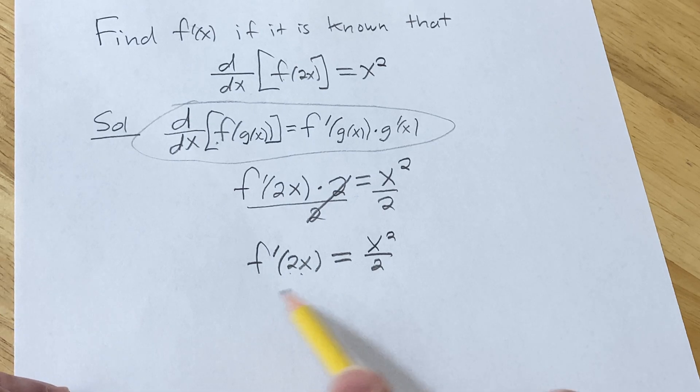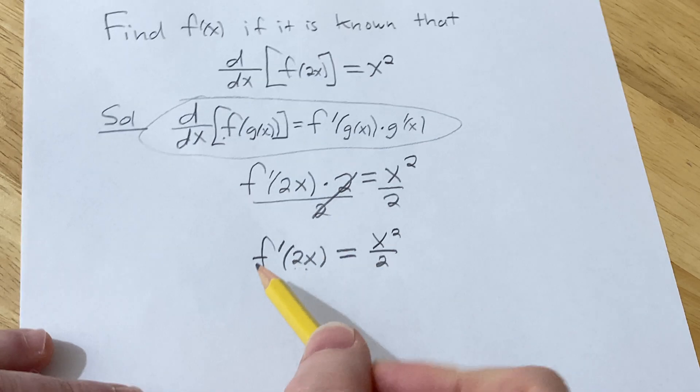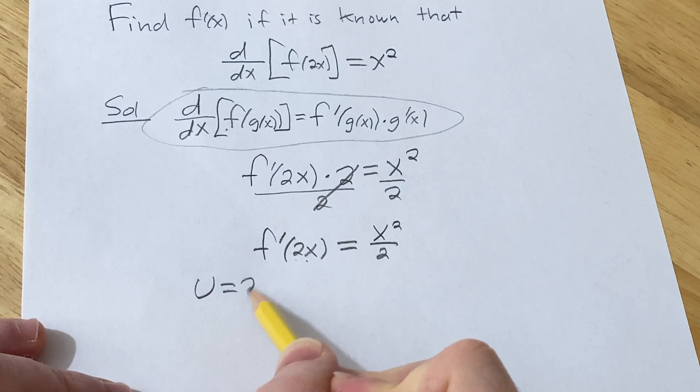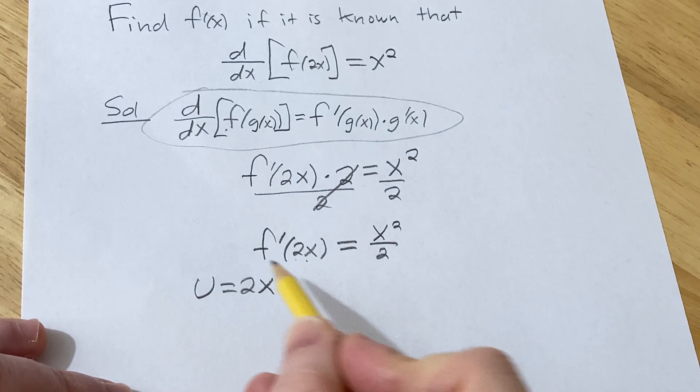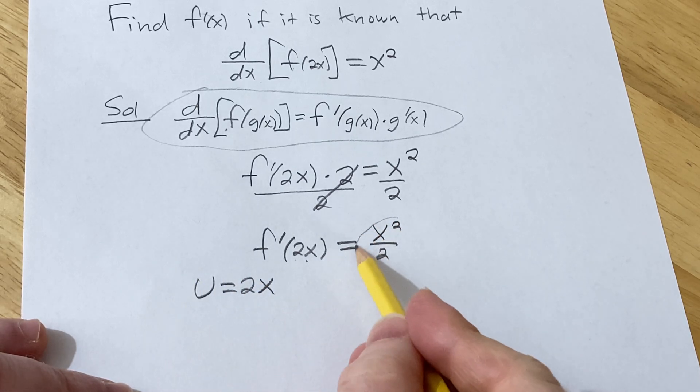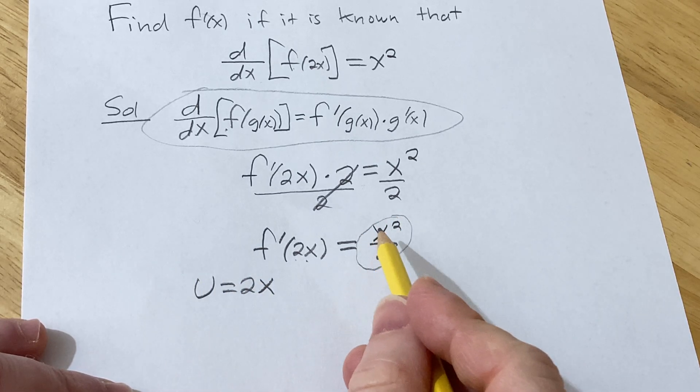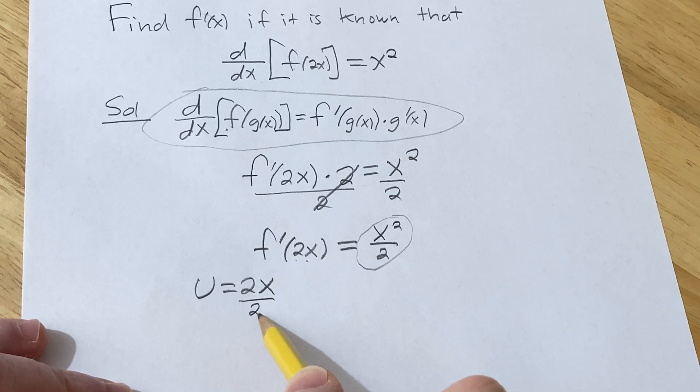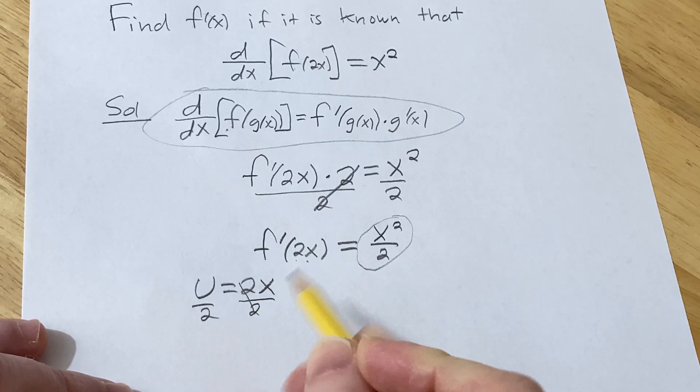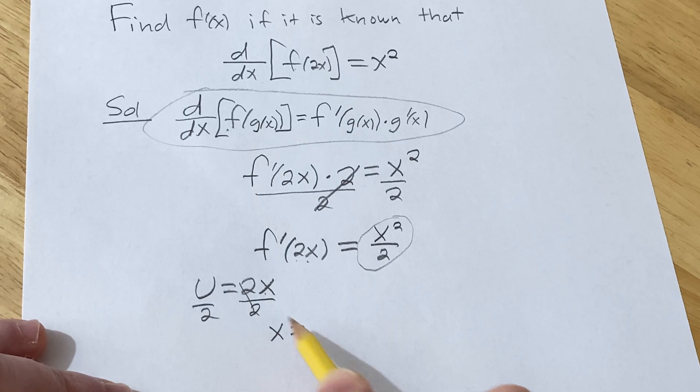So we're going to change the variables. We're going to make a substitution. I'm going to let u be equal to 2x. Now we can look at f as a function of u. We need to get rid of this x here, we want only u's. So we can solve for x. We get x equals u over 2.